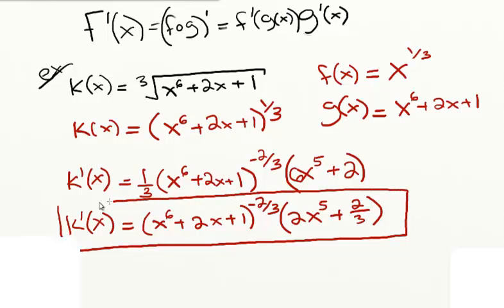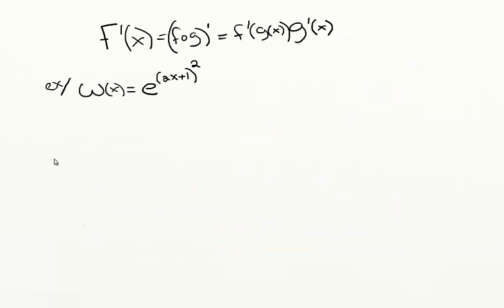We don't need to do a lot of simplification because this already looks kind of complex. We could distribute this 1 third to that last term. So 6x to the fifth divided by 3 is just 2x to the fifth, and then plus 2 thirds. That looks good enough for the simplification. So there we have it. This next example is a little bit more complicated — now we actually have a composition of three functions: f, g, and h.